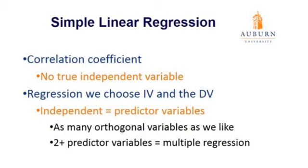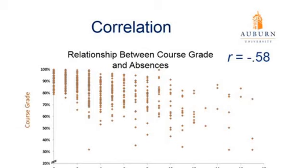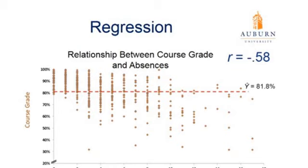Let's use the example of grades and absences for individual students that we used for correlation and talk about it in terms of regression. Regression involves additional analyses after you do your correlation. We talked about a negative relationship between absences and course grades — as absences increase, grades tend to decrease, with a correlation coefficient of R equals negative 0.58. In this scatterplot, looking at course grade by itself without absences, the past 517 students have an average grade of 81.8%.